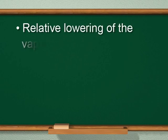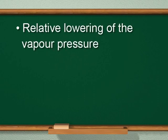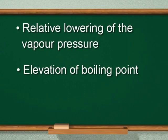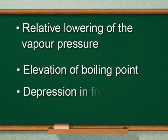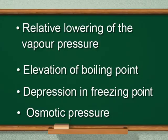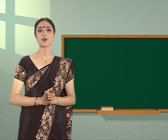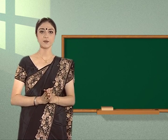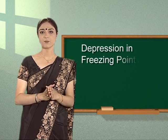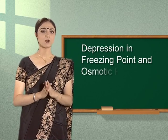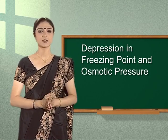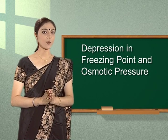The colligative properties are: relative lowering of the vapor pressure, elevation of boiling point, depression in freezing point, and osmotic pressure. We have already discussed relative lowering of vapor pressure and elevation of boiling point. Today we will focus on depression in freezing point and osmotic pressure.